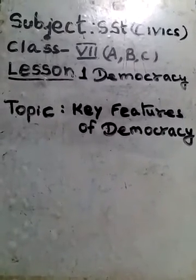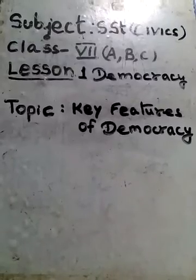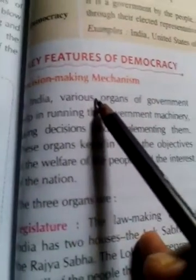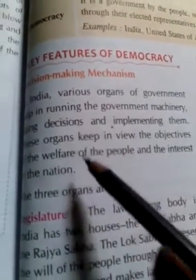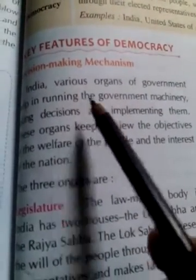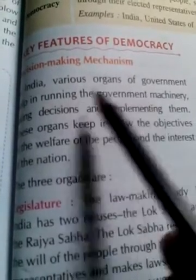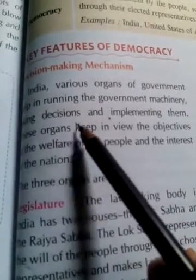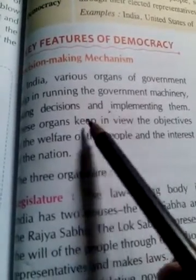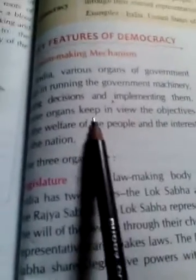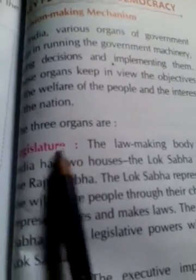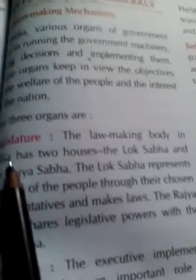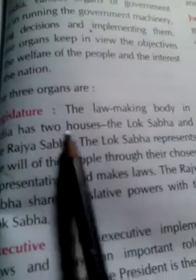Today we will discuss about the features of democracy. Decision making mechanisms — the decisions taken by various organs of the government help in making decisions and implementing the laws.